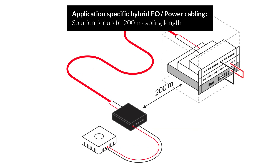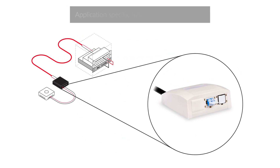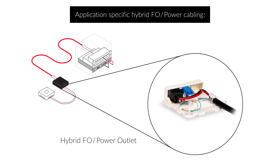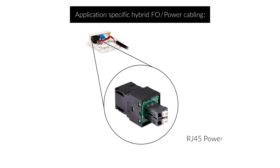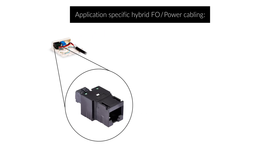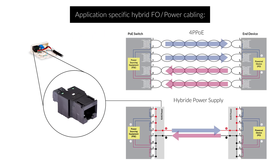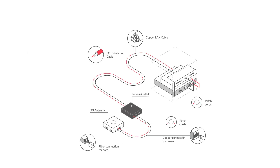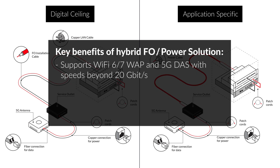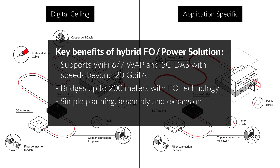Permanent links of up to 200 meters length can be supported with this cable. Since RJ45 connections cannot support any meaningful data rate over 200 meters distance, no extra RJ45 data port is needed. However, the hybrid outlet should support some fiber management. The RJ45 power module from R&M provides a spring clamp termination for two wires up to AWG-16 and splits the supply voltage to the RJ45 pins according to 4P PoE requirements. Whether as part of the digital ceiling or as application-specific cabling, the R&M hybrid fiber optic power solution offers unique benefits in terms of higher data rates, longer transmission distances, flexibility and modularity, and reliable PowerSafe RJ45 connectivity.